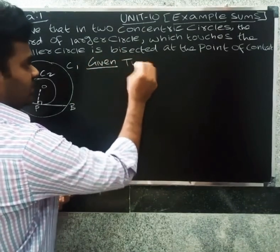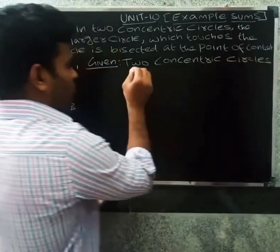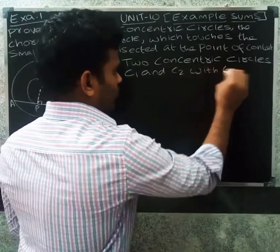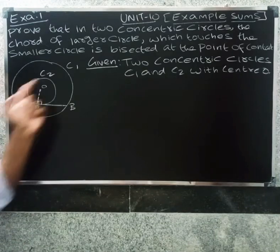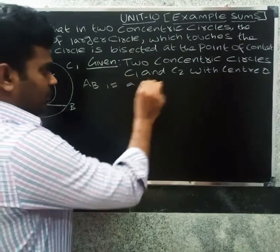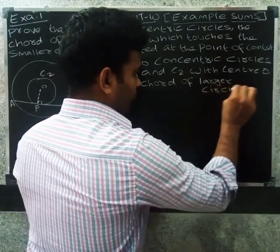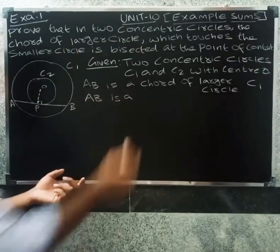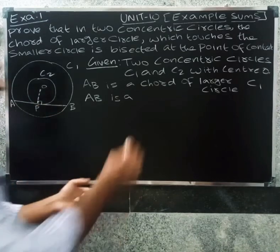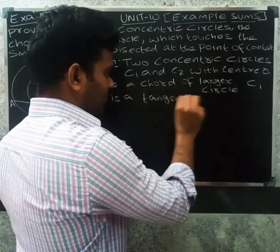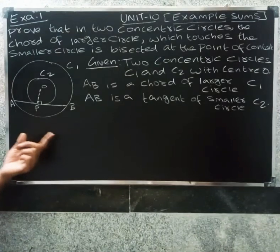Given: Two concentric circles C1 and C2 with center O. AB is a chord of the larger circle C1. AB is also a tangent of the smaller circle C2. That is the given information.